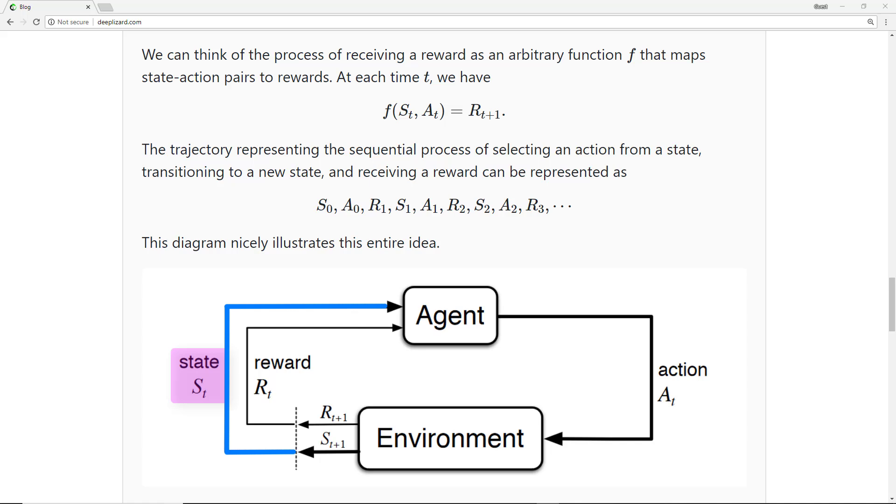Step 2. The agent observes the current state and selects action a_t. Step 3. The environment transitions to state s_{t+1} and grants the agent reward r_{t+1}. This process then starts over for the next time step, t plus 1.